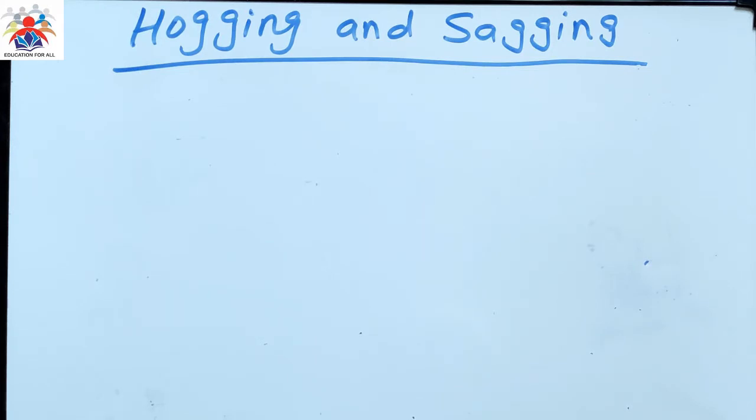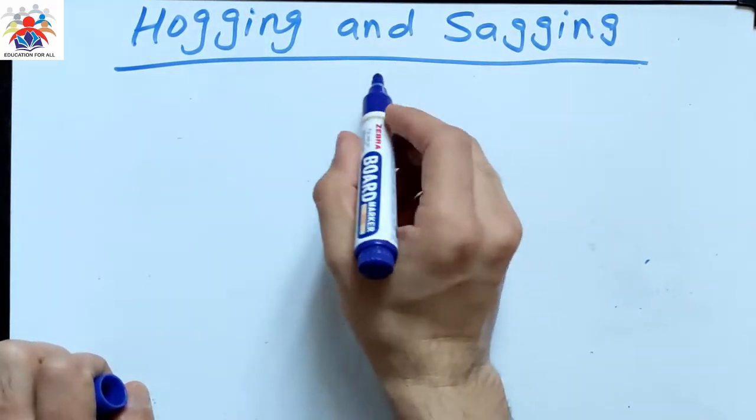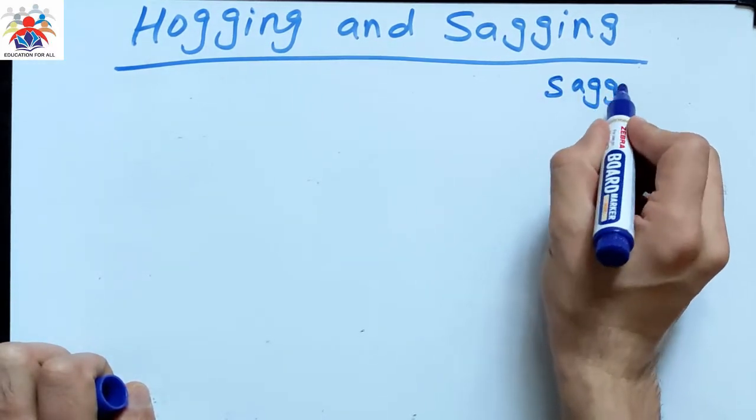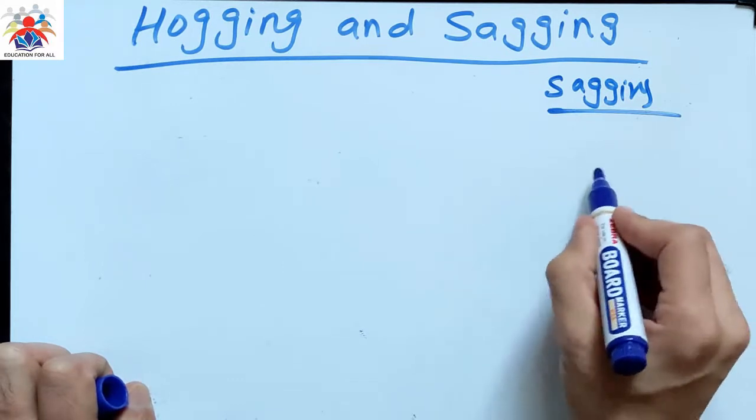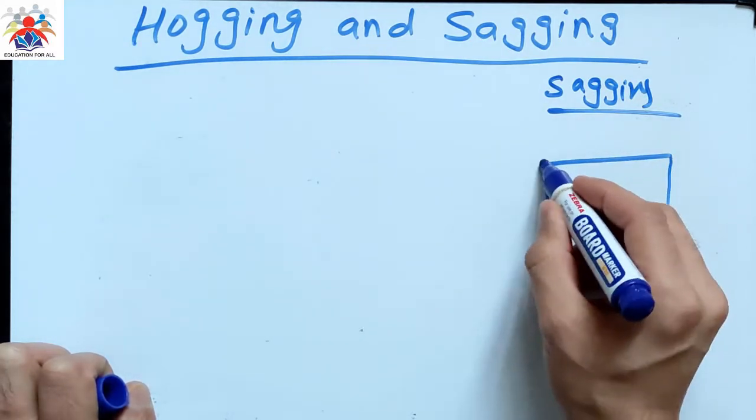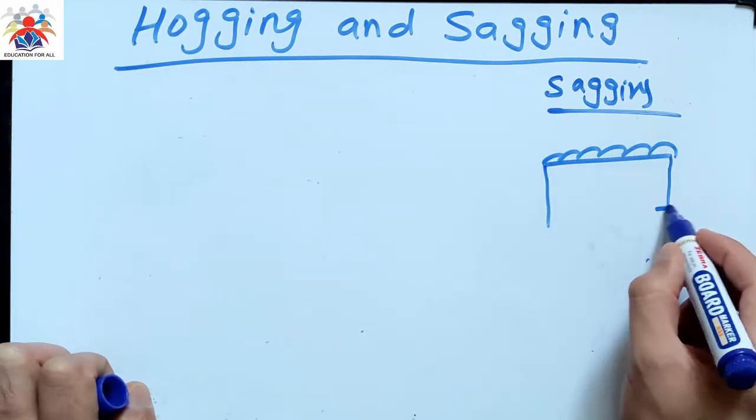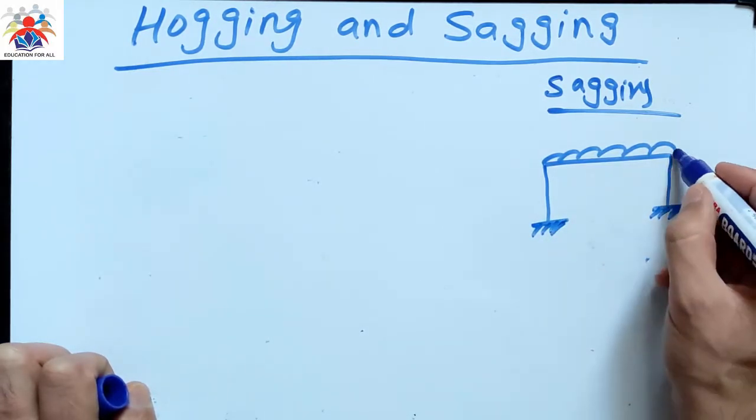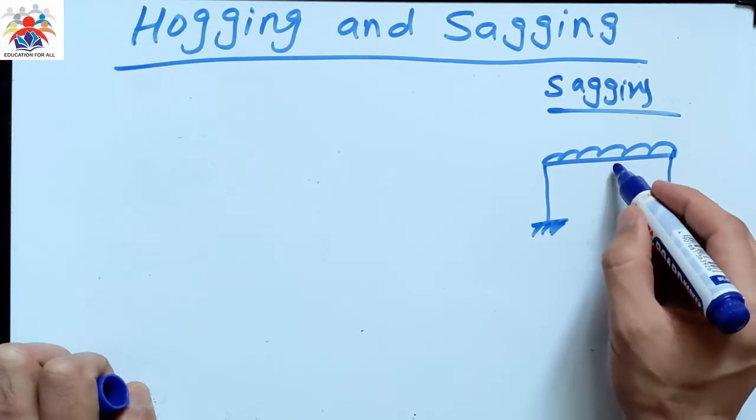I am going to give you an example. First of all, I am going to tell you about sagging. Imagine we have a beam with the UDL acting on it and we have two supports here.